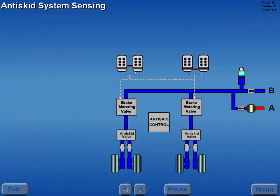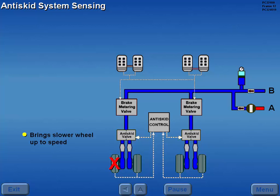The anti-skid system electronically senses and compares wheel rotation. If the rotation rate of one wheel drops significantly, the system causes the anti-skid valve to reduce and modulate brake pressure, bringing the slower wheel up to speed.